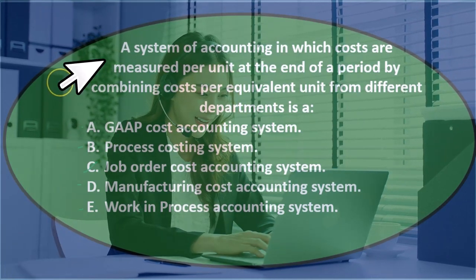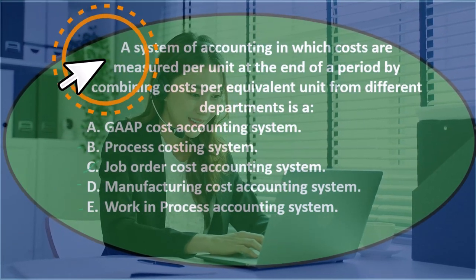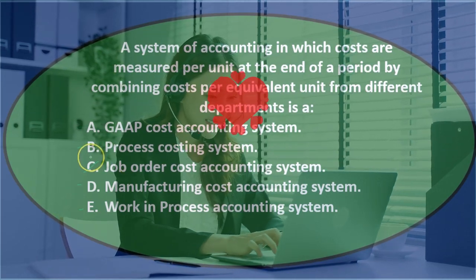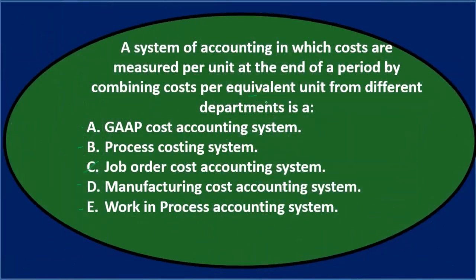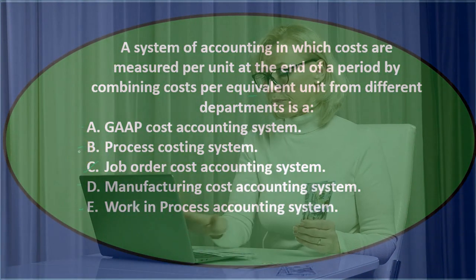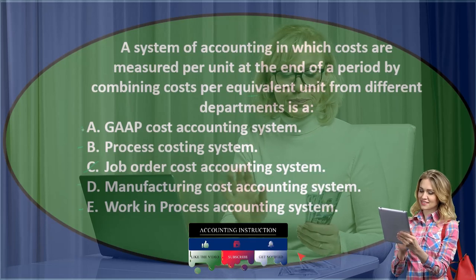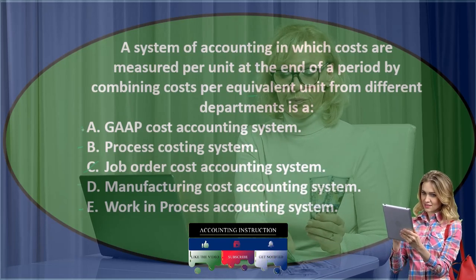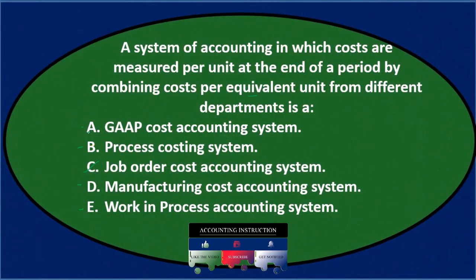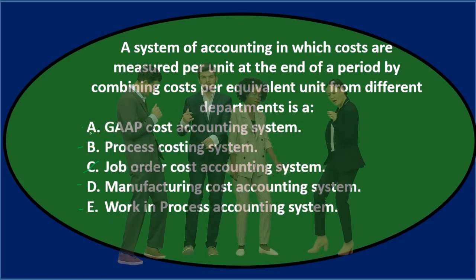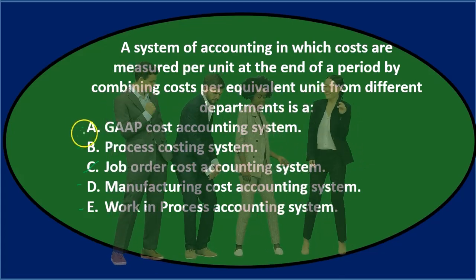Going through again: the key component is 'combining costs per equivalent unit from different departments.' That differentiates process cost from job cost — we use equivalent units in process costing but not in job costing. So it sounds like a process cost system. Option A (GAAP) is broader; a process cost system is a valid GAAP system, but option B is more specific.